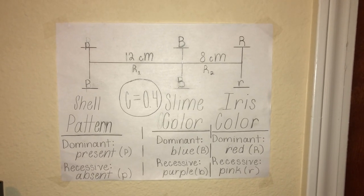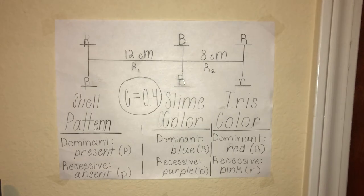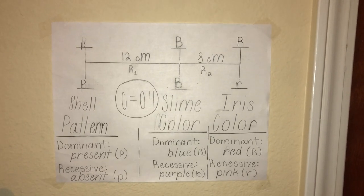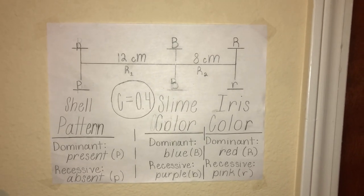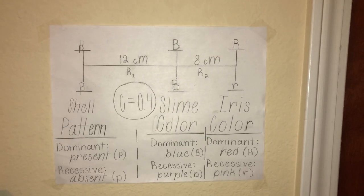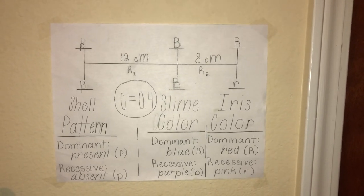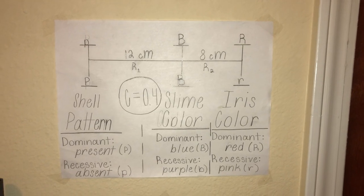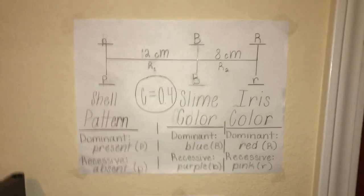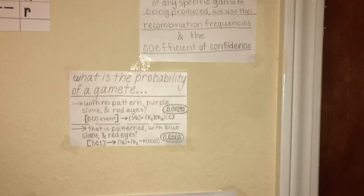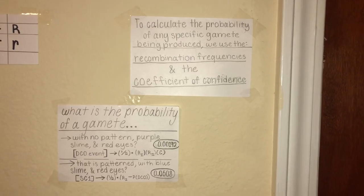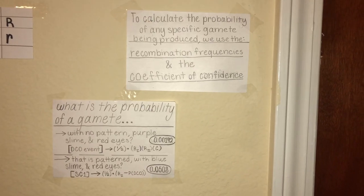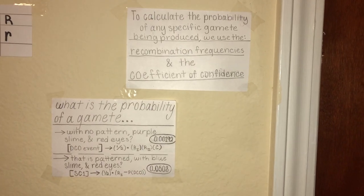We can use the data on this table and the various values to determine the frequency of any potential gamete from the F1 individual. To calculate this probability we are going to use the recombination frequencies and the coefficient of confidence.